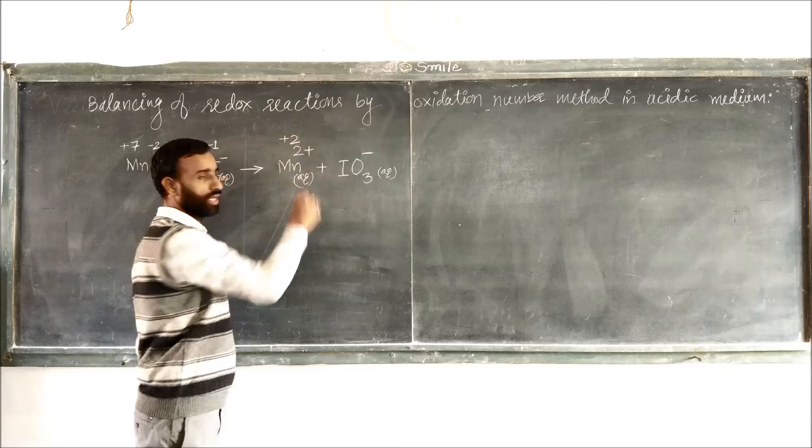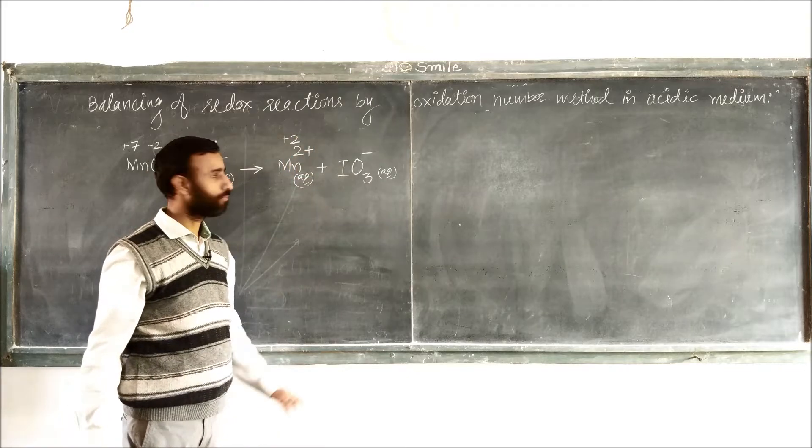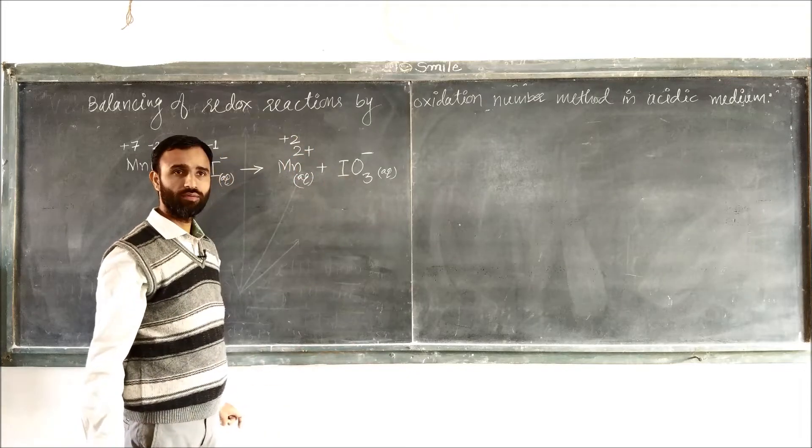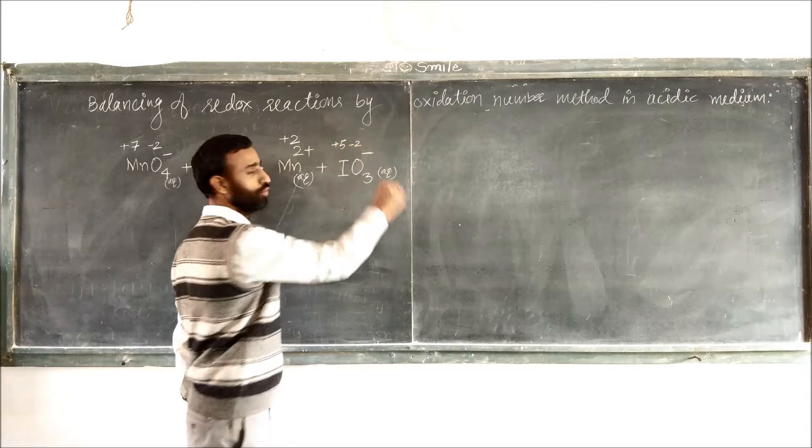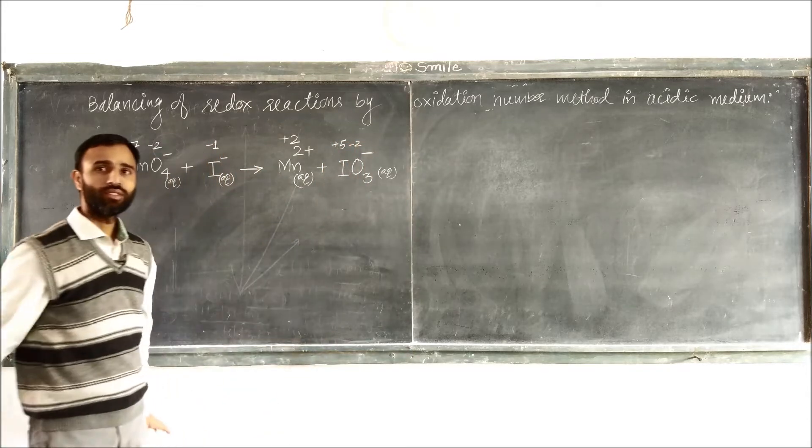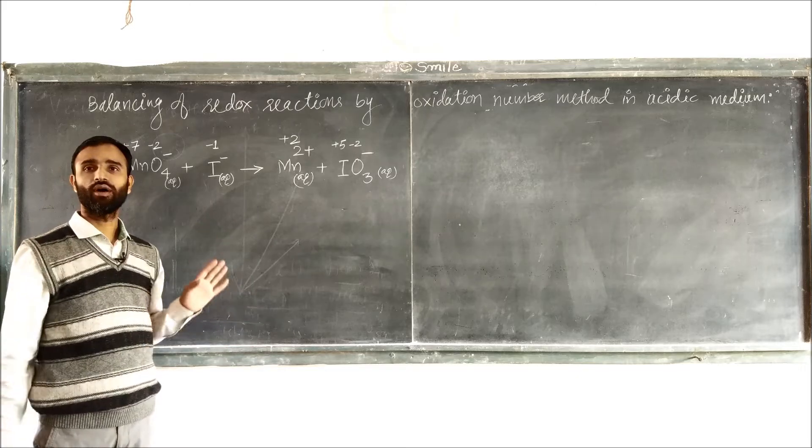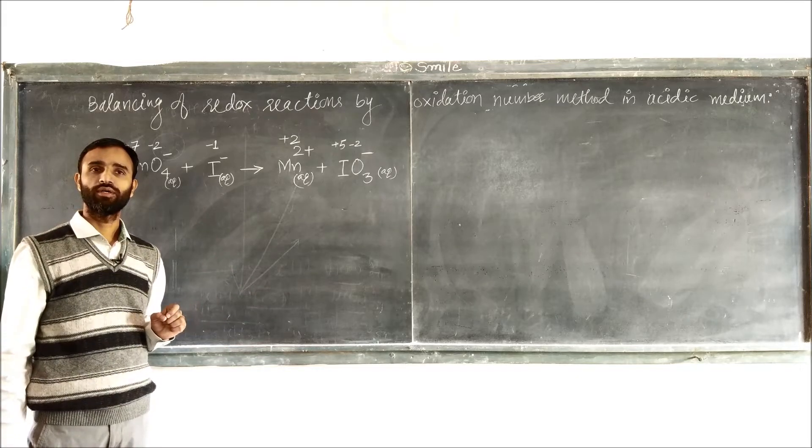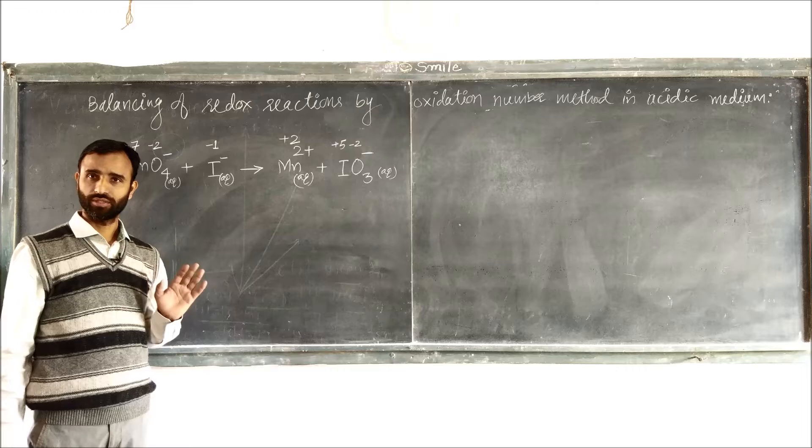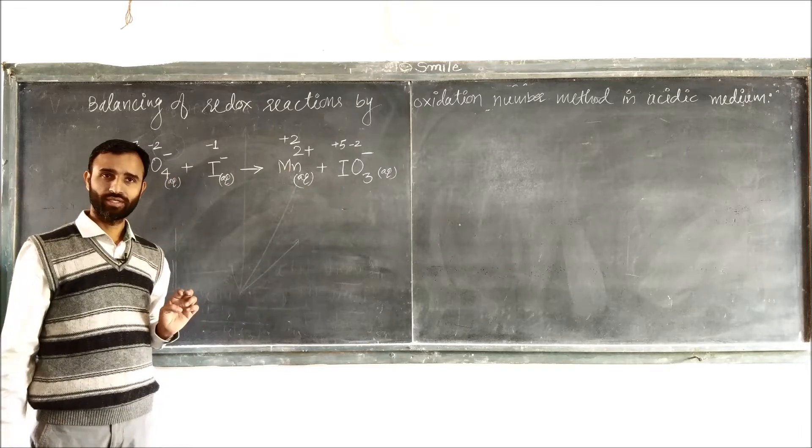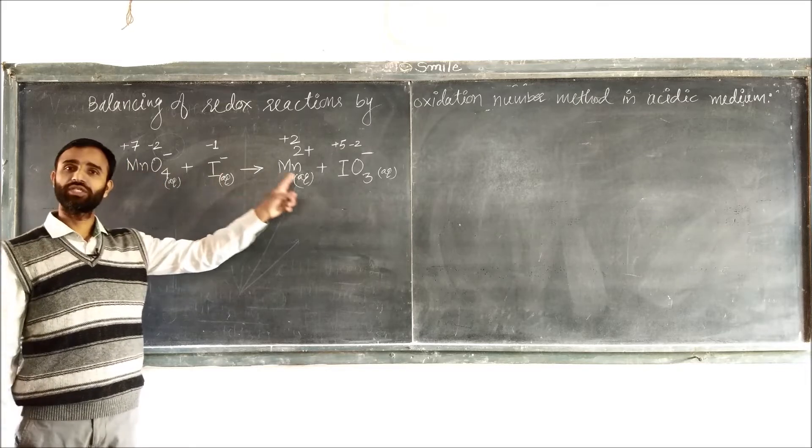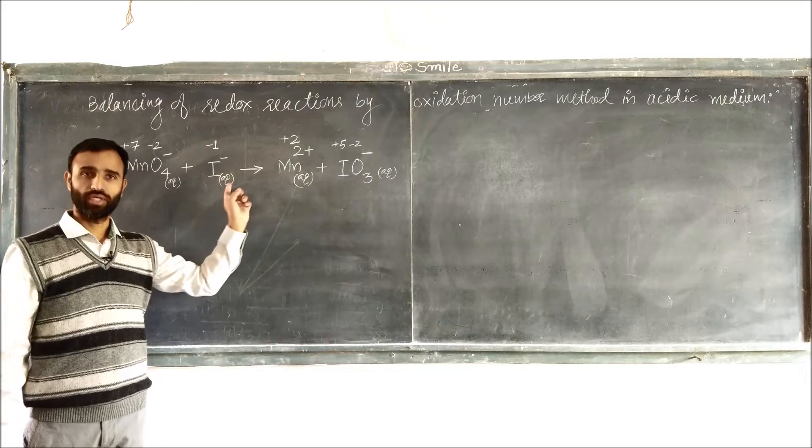Mn2 plus, again simple ion, plus 2. Iodine plus 5, Oxygen minus 2. That means there is no change in the oxidation number of oxygen, oxygen is minus 2, minus 2 on both sides. There is a change in oxidation number of manganese and iodine.